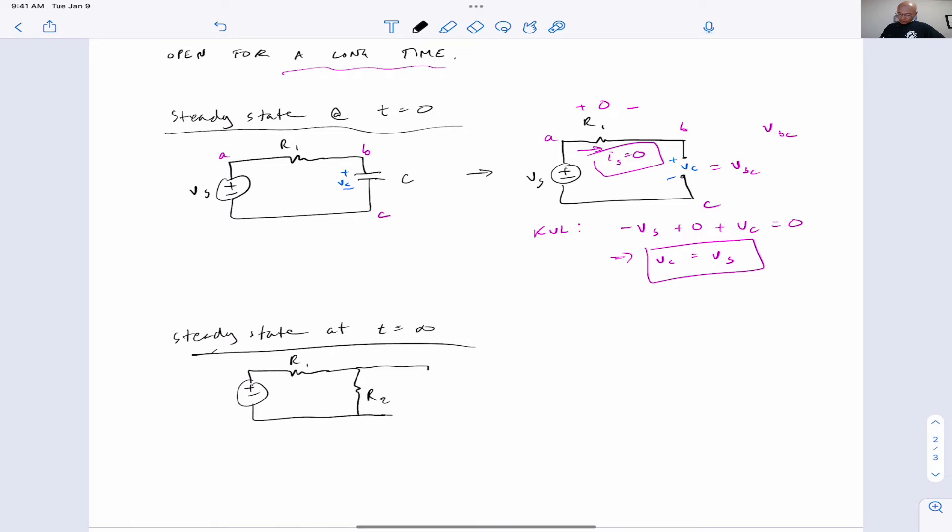And then I'm just going to skip straight to steady-state, and we'll draw the open circuit for the capacitor. So what we can see here is that if we designate the nodes A, B, C again, VC is VBC.